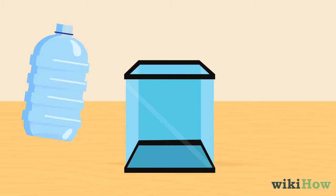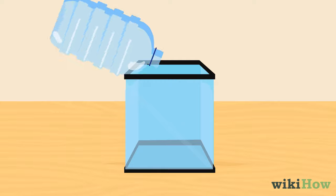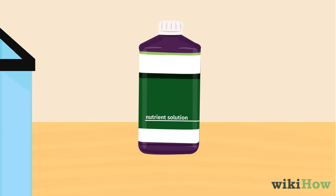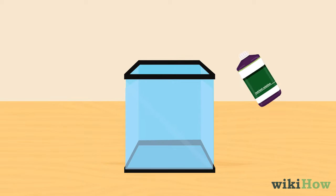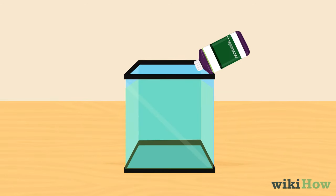Fill the container with purified water, then add a nutrient solution, which you can buy at a pet store or online. The nutrient solution will provide the algae with the nutrients it needs to grow.